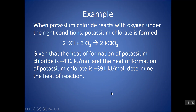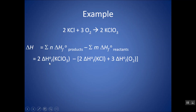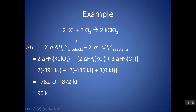Try this next one — everything you need is in the problem statement. This is just another way to find delta H if you have heats of formation of the reactants and products. You're doing the sum of products minus the sum of reactants, remembering to multiply by the coefficient, and remembering that an element in its standard state has a heat of formation of zero. So I'm doing two times delta HF of KClO3 minus two times delta HF of KCl plus three times zero for O2, and I get positive 90 kilojoules — an endothermic reaction.